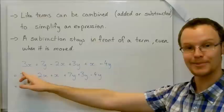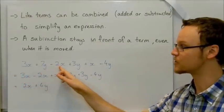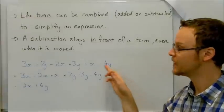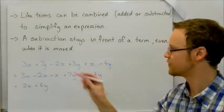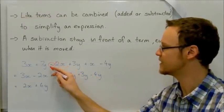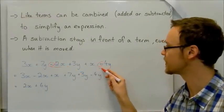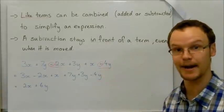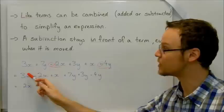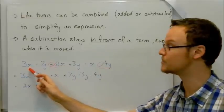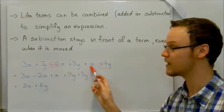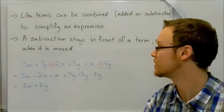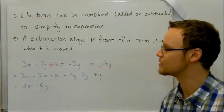So here we've got an example. 3x plus 7y minus 2x plus 3y plus x minus 4y. These minus signs stay in front of the variable that they come after. Or in front of the term, sorry, they come after. In front of this term. So if we were to move the like terms next to each other, the x's are like terms and the y's are like terms. So here the x's are like terms and the y's are like terms.